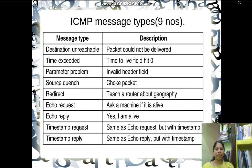The seventh message type is timestamp request and timestamp reply. This is mainly used for measuring network performance. Upon receiving a timestamp request, a machine timestamps the time on the packet and replies. Both the packet arrival time and the packet delivery time are recorded in the packet, so the source machine can calculate how much time it takes for a packet to reach the destination and come back.